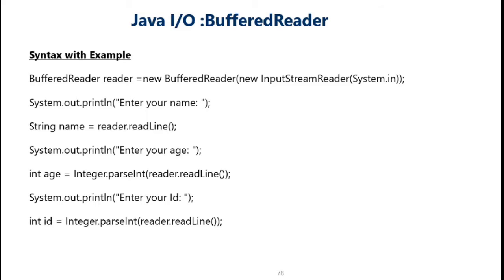Now the object is created. Next, use that object for reading values. Here there is a message 'Enter your name', and after that you can read the name using the readLine function and store it into the variable name. The readLine method reads string values. To read other types like integer, character, or float, these strings must be converted into those particular types using conversion methods. Those conversion methods are given on the next slide, and for using IO you have to use the java.io package.